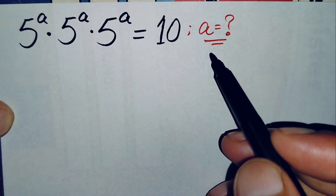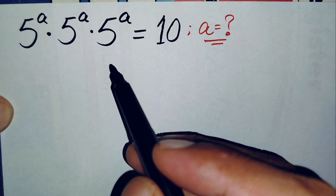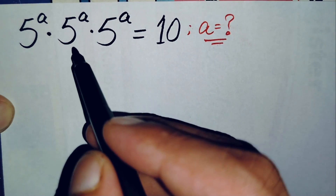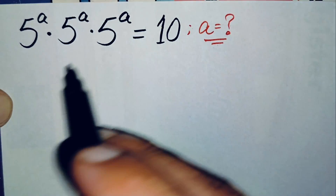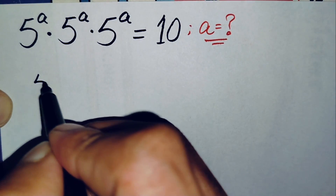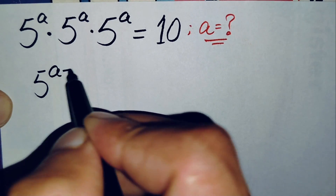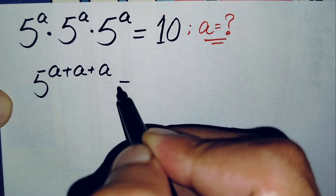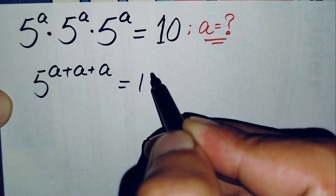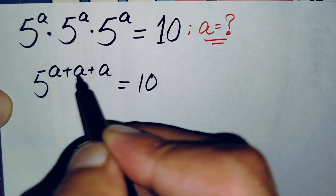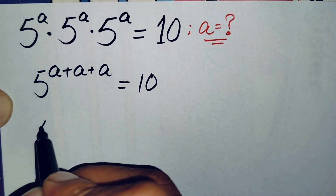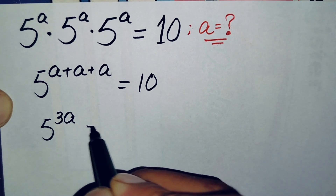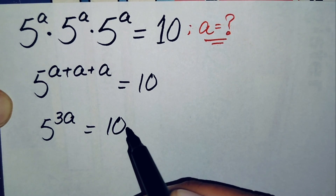Here we will try to find the value of a. On the left-hand side the bases are the same, so we will add the powers. This will become 5 raised to power a plus a plus a, which simplifies to 5 raised to power 3a, is equal to 10.